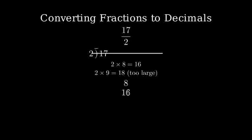Now since we have a remainder, we need to add a decimal point and bring down a zero. One zero divided by 2 equals 5. Therefore 17 divided by 2 equals 8.5.